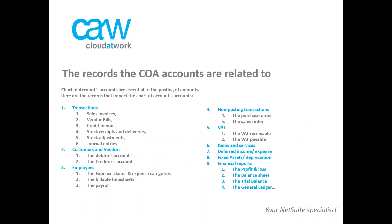Now, how are charts of accounts used on NetSuite? Whenever there's an item or a customer vendor on a transaction, there is an accounting impact to these accounts. For example, your sales invoices will impact your receivables and the VAT, but also the sales account related to the items on the transaction. Journal entries will let the user decide which account to debit and credit. Employee expense claims, expense categories, billable timesheets, and payroll will actually be impacting the related accounts from the chart of accounts.